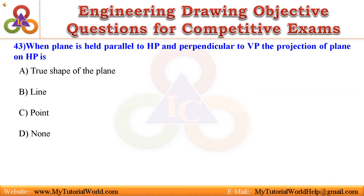43. When a plane is held parallel to HP and perpendicular to VP, the projection of the plane on HP is: A. True shape of the plane, B. Line, C. Point, D. None. Answer is True shape of the plane.